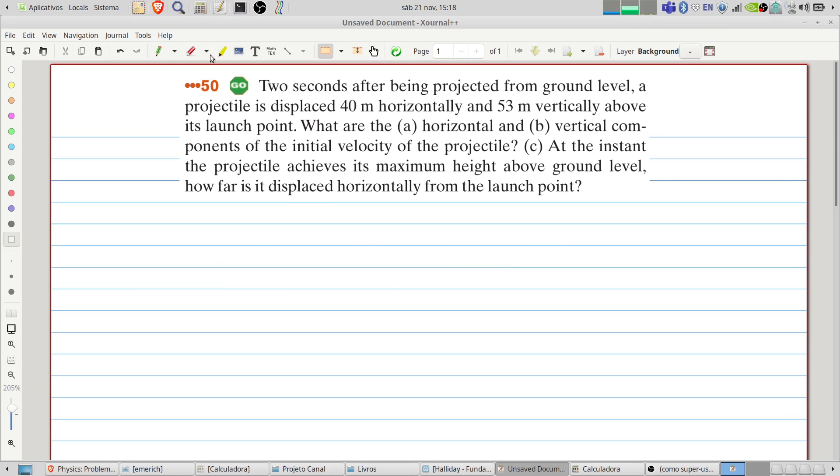Let's solve this problem. I will start drawing the launch of the projectile. Sometimes it's difficult to do the parabola. Here we have our projectile and its initial velocity. Let's do the vector of the initial velocity.